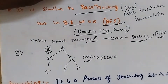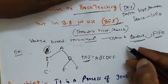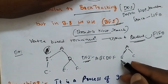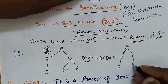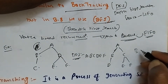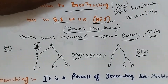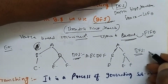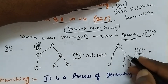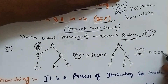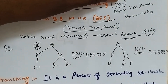For the same diagram using BFS — best first search — it goes level by level: first A, then the next level B and C, and then the next level D, E, F.